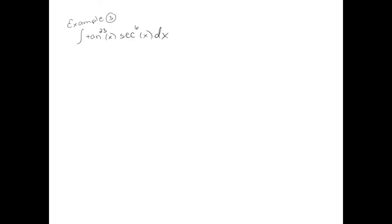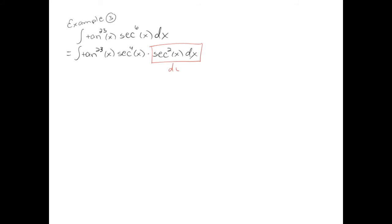Let's do an example. Since the power on secant is even, the first step is to pull out a secant squared to be part of the du. Secant to the sixth is separated into secant to the fourth and secant squared. The secant squared part becomes our du. Back-constructing the substitution: u must equal tangent. Writing the easy parts first, tangent to the 23rd becomes u to the 23rd, and secant squared gives us our du.